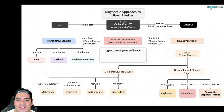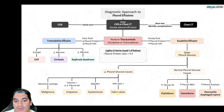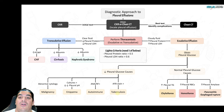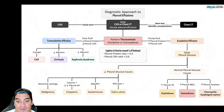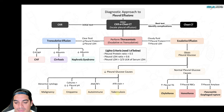Light's criteria determine whether an effusion is transudative or exudative. If pleural protein-to-serum protein ratio >0.5, or pleural LDH-to-serum LDH ratio >0.6, or pleural LDH is greater than two-thirds the upper limit of normal serum LDH — it's exudative. If none of these apply, it's likely transudative, and the most common transudative cause is CHF.